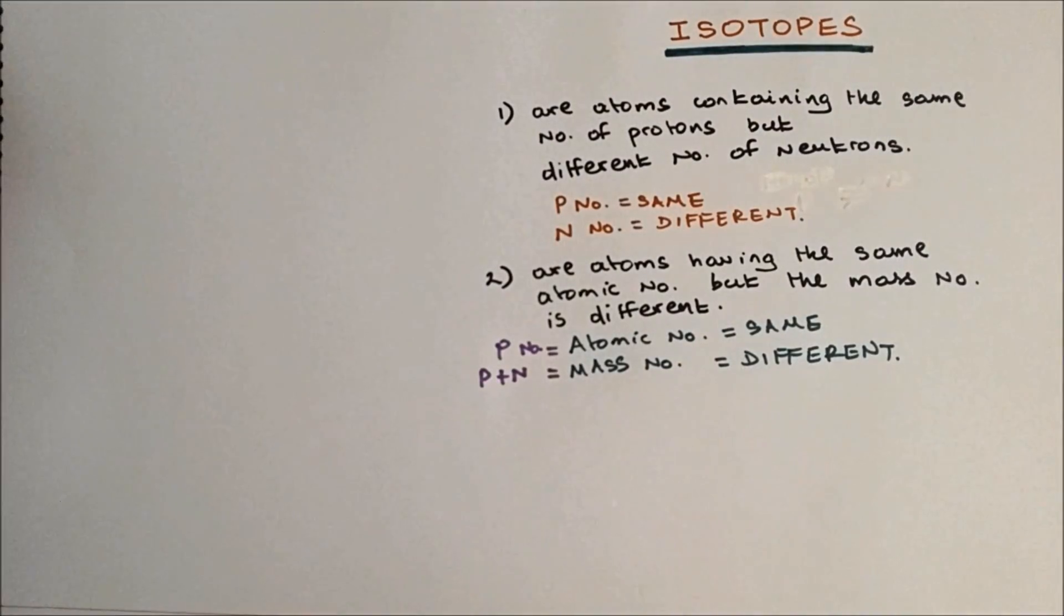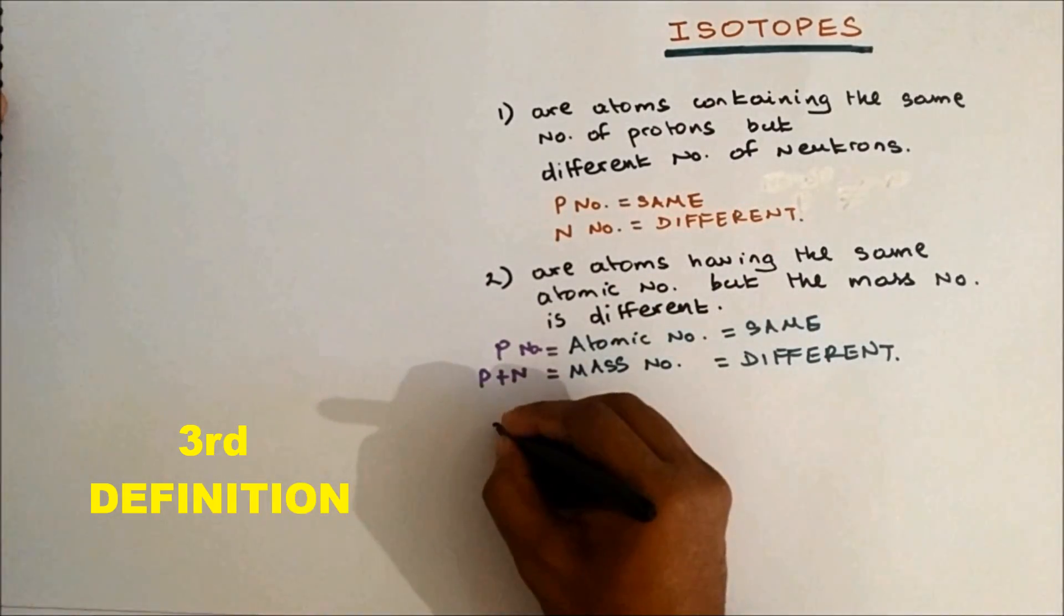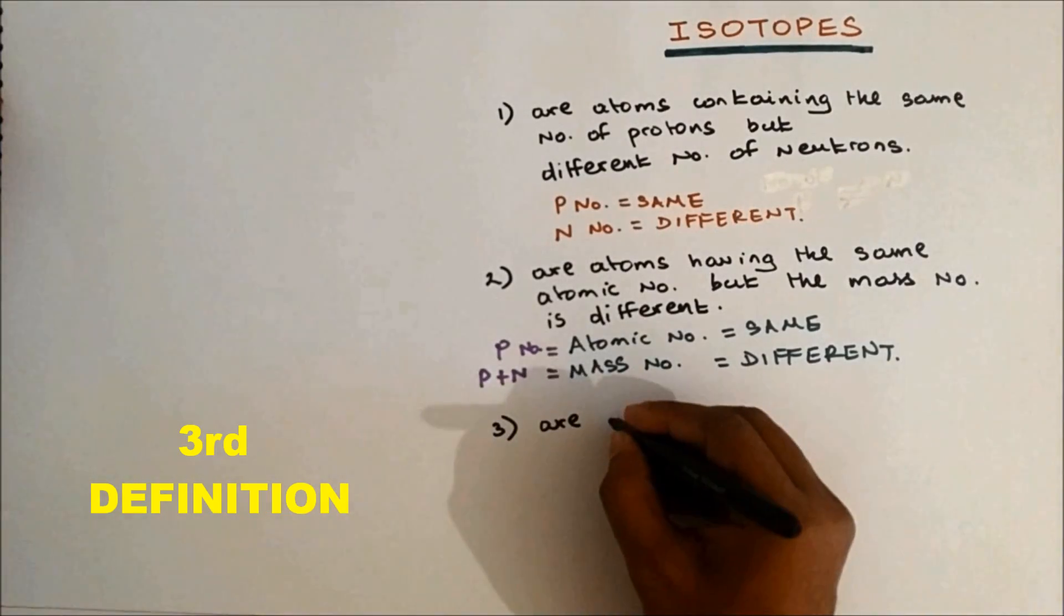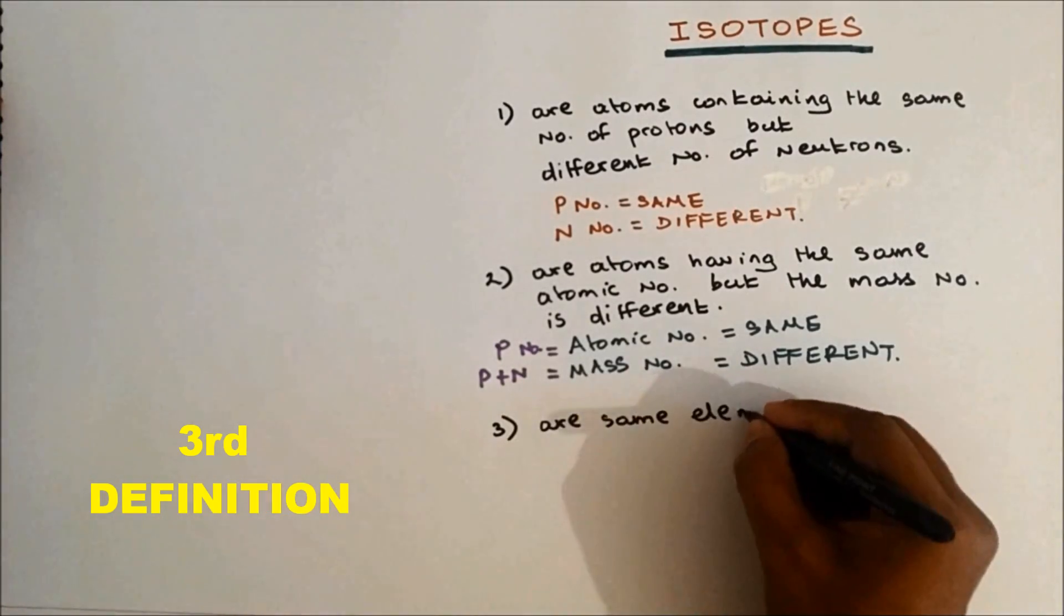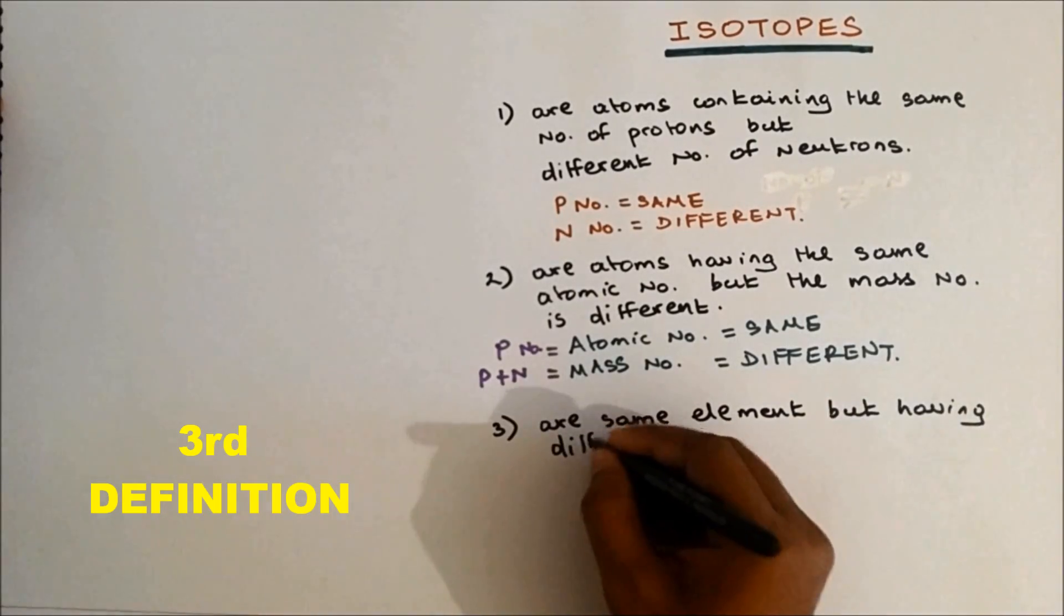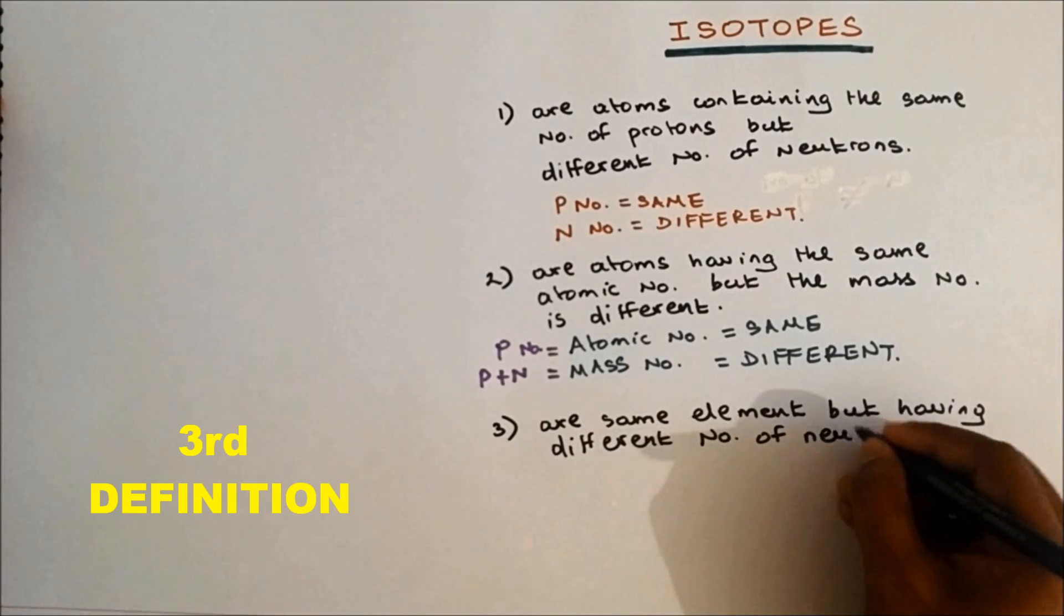And the last definition, which is similar to the first definition: isotopes are the same element but having different number of neutrons.